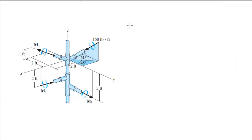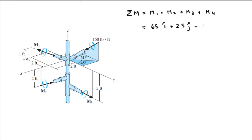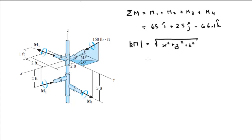The sum of the moments equals M1 + M2 + M3 + M4. Adding the i's, j's, and k's together, the resultant is 65i + 25j - 66.1k. The magnitude is found by taking the square root of the sum of the squared components, and it equals 96 pound-feet.